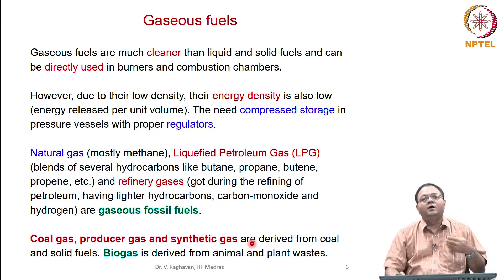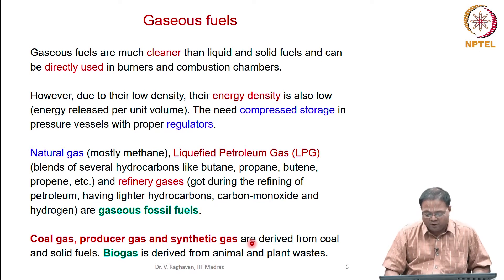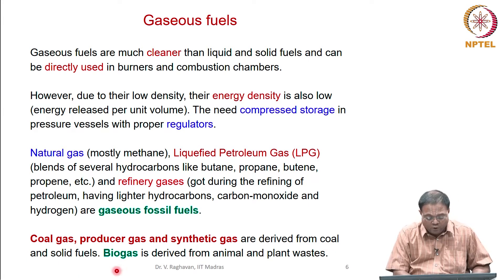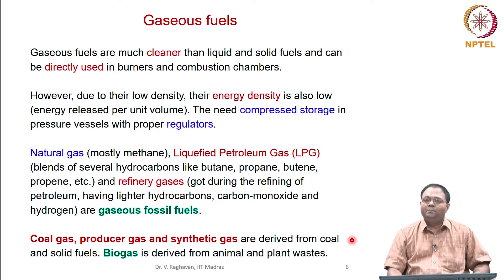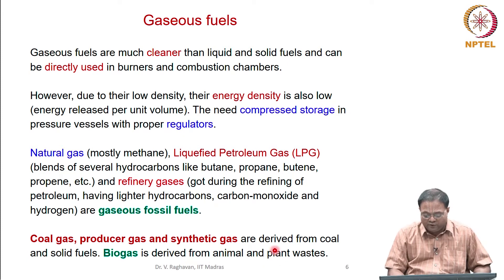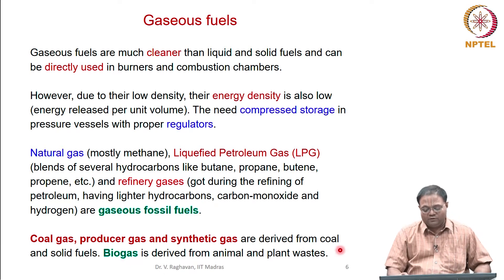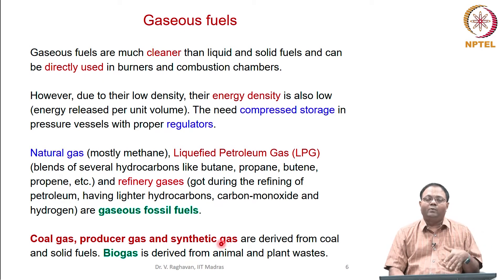Coal gas, producer gas, and synthetic gas are formed from reactors designed to produce such gases, with some composition differences in the produced gases. The common feedstock is coal and biomass as solid fuels. Biogas is derived from animal and plant wastes such as cow dung, vegetables, and other plant wastes, which are fermented under certain conditions.